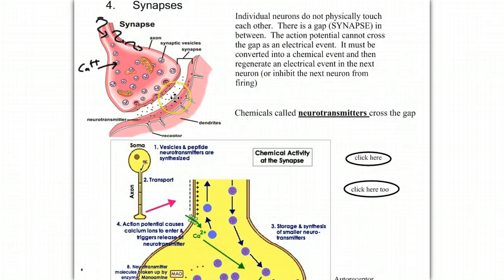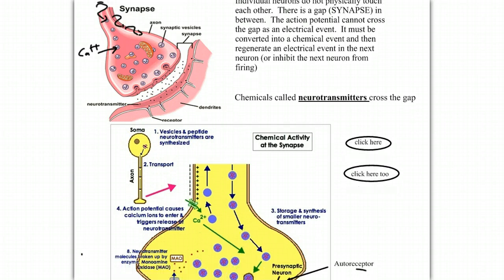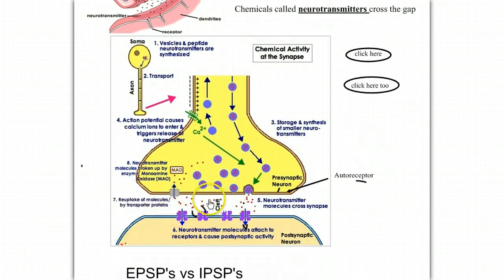These neurotransmitters are shape-specific molecules that bind to receptors on the postsynaptic side. These are protein receptors in the membrane of the neighboring cell.